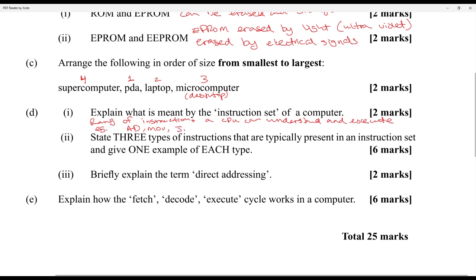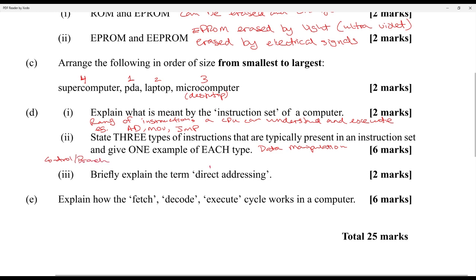Examples of instructions include: add, move, jump. Examples always help when they ask you to explain. State three types of instructions typically present in an instruction set and give one example of each: data manipulation — for example, set a value or set a register; control or branching — for example, jump to a memory location; and arithmetic operations — for example, add or subtract from a register.